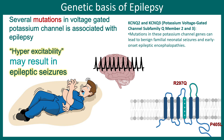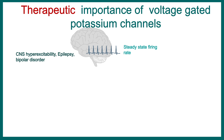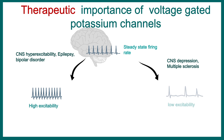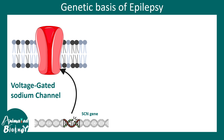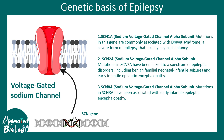If potassium channels are the culprit, one can use a voltage-gated potassium channel antagonist to bring activity back to normal — making voltage-gated potassium channels an interesting therapeutic target. Similarly, genes encoding voltage-gated sodium channels are found to be mutated in epilepsy; for example, SCN1A, SCN2A, and SCN8A all encode several subunits of the voltage-gated sodium channel and are found to be mutated in epilepsy patients.